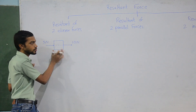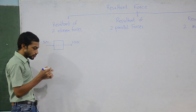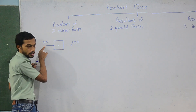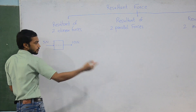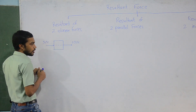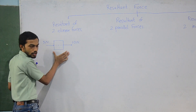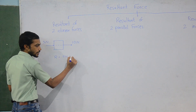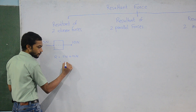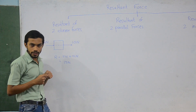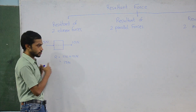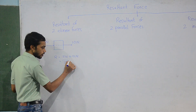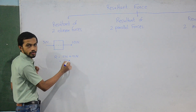When finding the resultant force of two collinear forces, first check the direction of the forces. Here, 5 newtons is towards the right and 10 newtons is also towards the right. As the directions are the same, you add them: 5 newtons plus 10 newtons gives 15 newtons. Since force is a vector quantity, we mark the direction — 15 newtons from left to right.